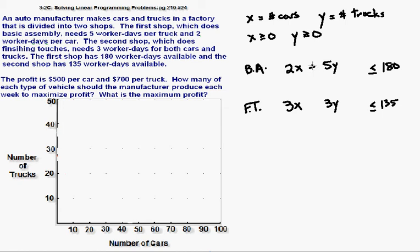So the sum of the worker days in the first shop added together have to be less than or equal to 180. There's our third inequality. And the sum of the worker days for both cars and trucks in the second shop have to be less than or equal to 135. So that's our second inequality.